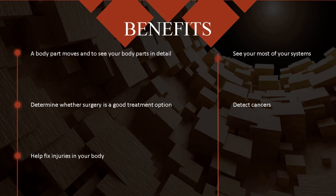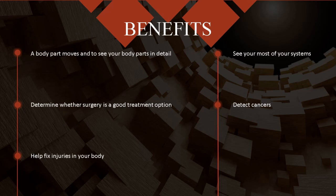Benefits: Fluoroscopes are used to help doctors see most of your body systems, such as the skeletal, urinary, respiratory, and reproductive systems. It also allows doctors to see how a body part moves and to view body parts in detail. The information received from a fluoroscopy can be critical to properly diagnose a condition. It is also used to help people learn more about blood vessels of the heart and brain, and to help doctors fix injuries in the body. If there are any arteries blocked in your organs, a fluoroscope will help identify them.